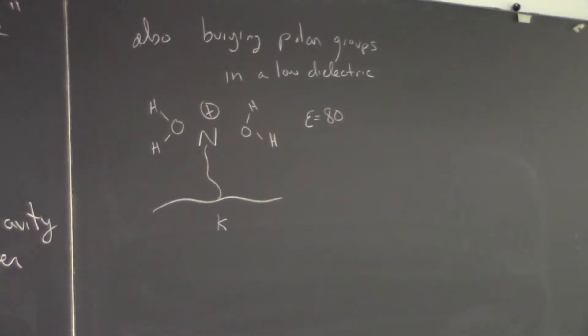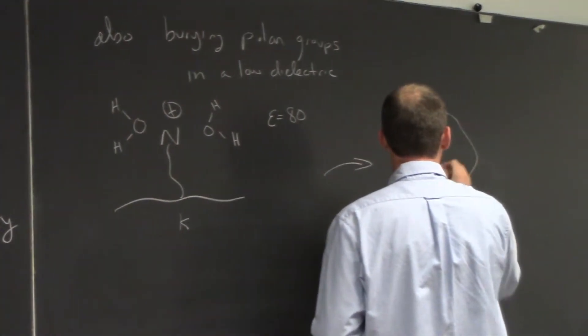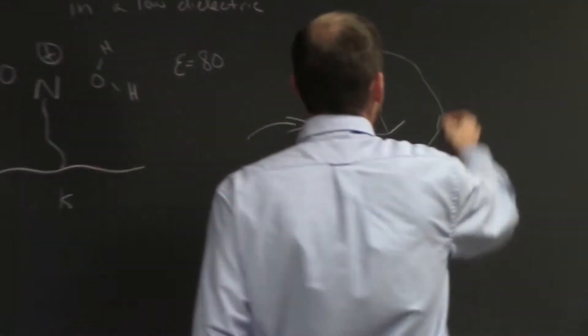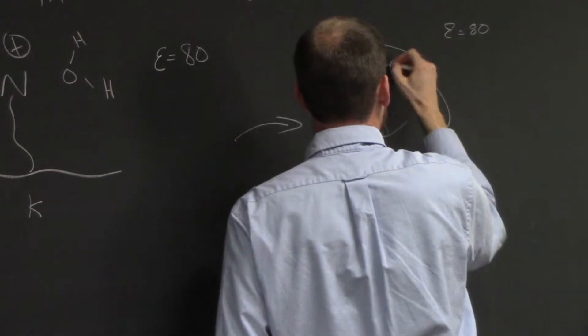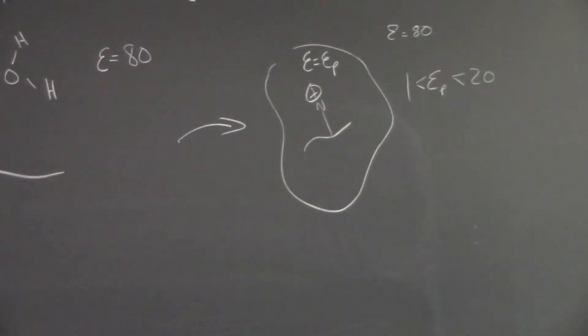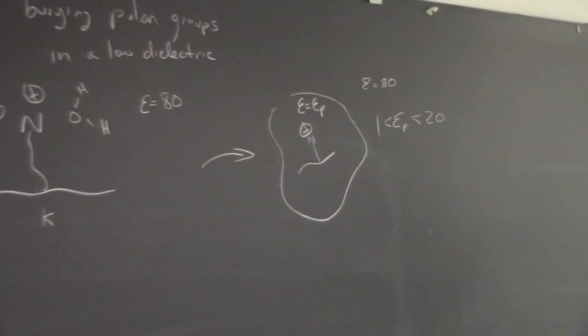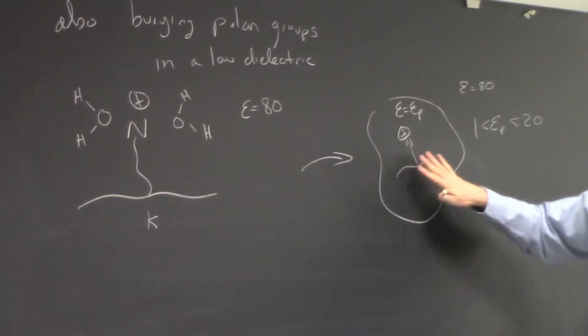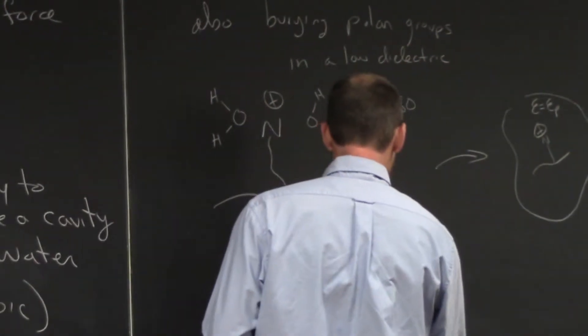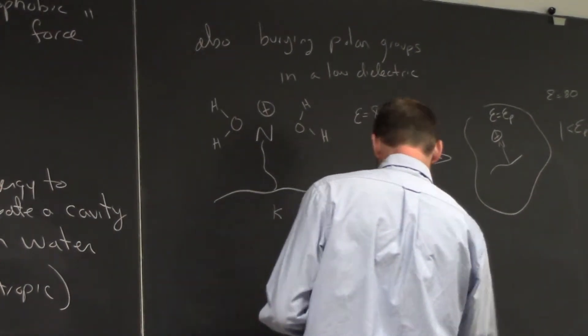Meaning there's a lot of permittivity and a lot of ability for that solvent to rearrange. Now if we take that protein and fold it and put that lysine in the middle of a protein and it's buried, well the water still has a dielectric of 80, but the protein has a low dielectric where the dielectric of the protein could be anywhere from 1 to 20 depending on which models. Certainly an oil like a pure hydrophobic phase would be on the order of 1 to 4. So it's going to be a lot lower dielectric. There's not dipoles that can rearrange and it's going to be more difficult to have that point charge in that medium.